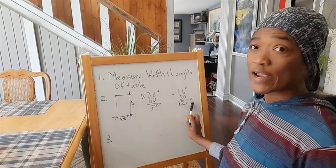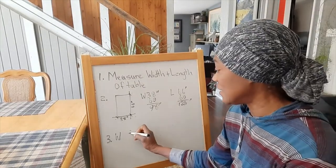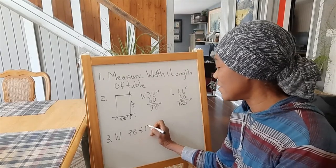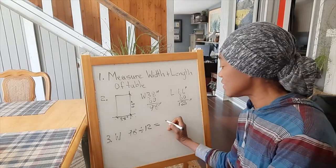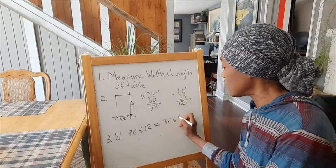The width is 98 inches. We divide by 12, and that gives us 8.16 feet—that's the width of our rug.